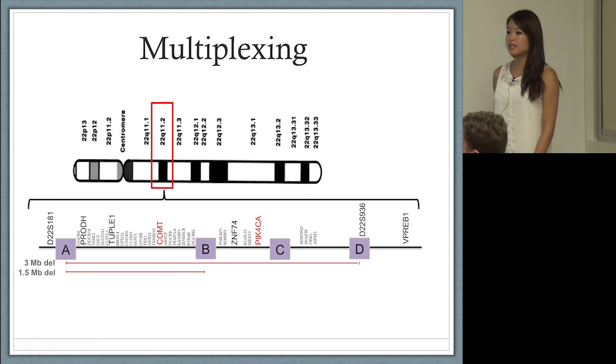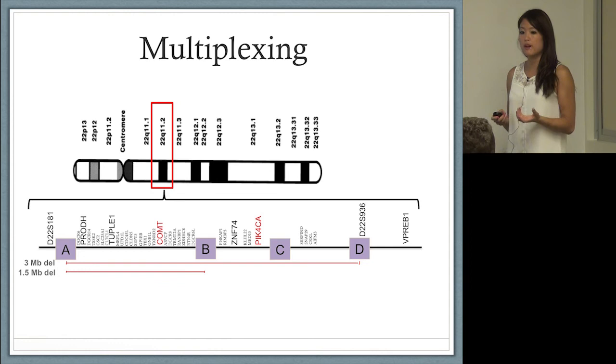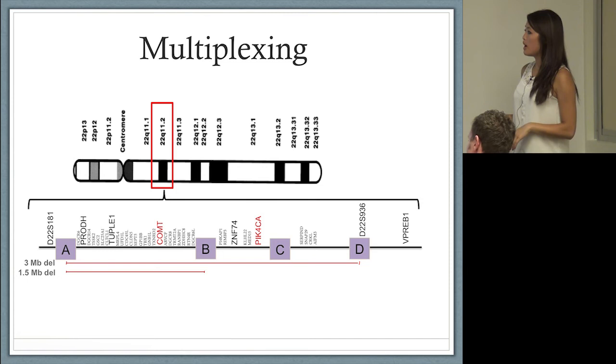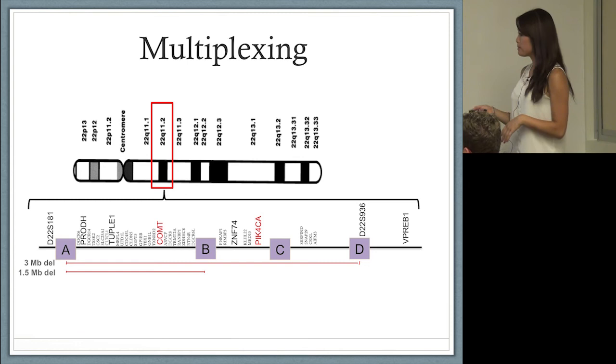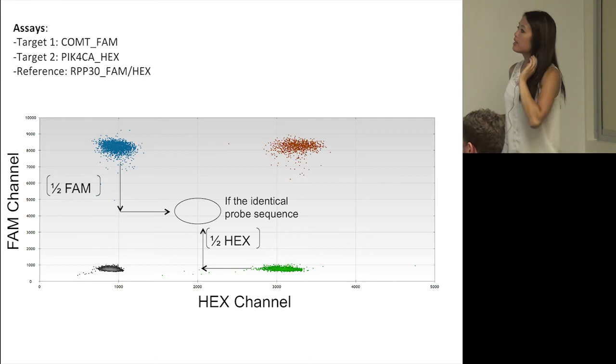We were also interested in multiplexing because when trying to diagnose individuals, we want the methodology to be cheap and fast. Multiplexing would decrease costs and increase the amount of information per well. We chose two assays: COMT because it's deleted in the majority of individuals, and PIK4CA to differentiate between individuals with different types of deletions.